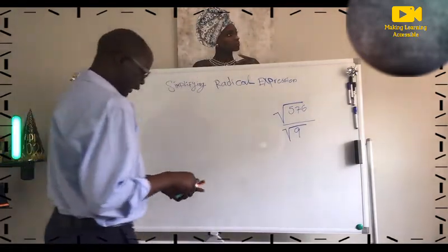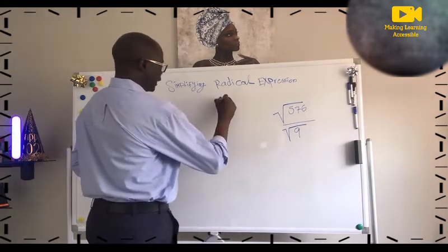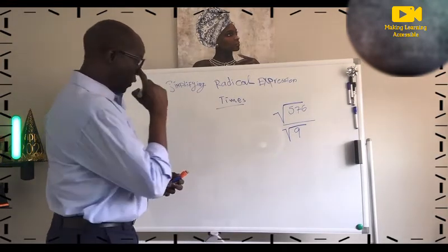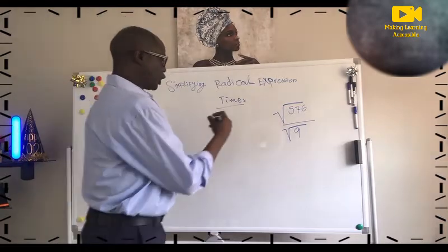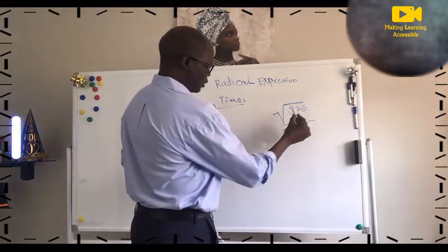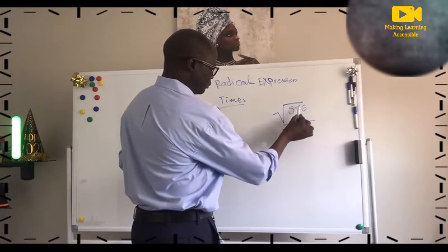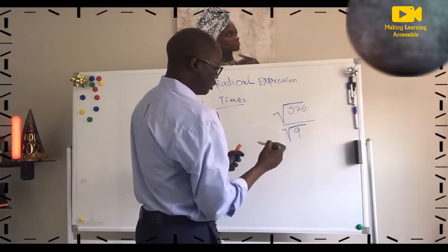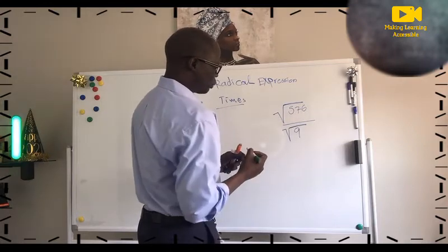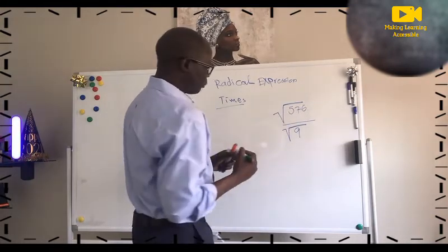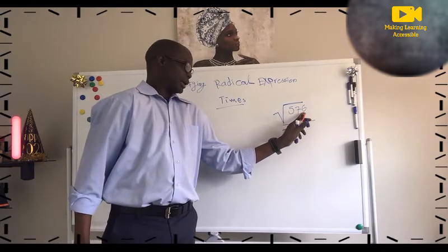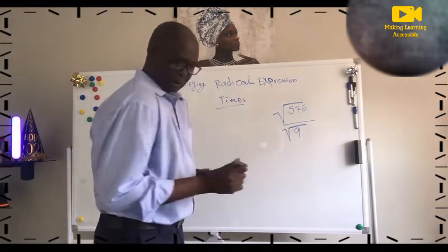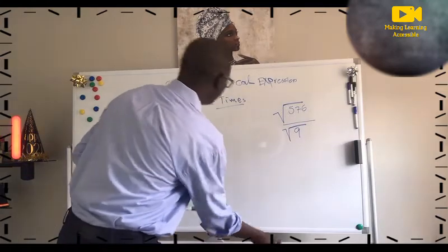The first technique we can use is times — multiplication. When we multiply a number, we can see where this number should be, or which number times 9 gives us 57. The way you approach the problem, you look at the first two numbers and see if you can divide into 9. The easy way to figure that out is using times tables.